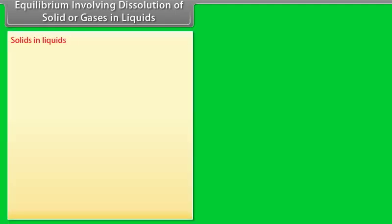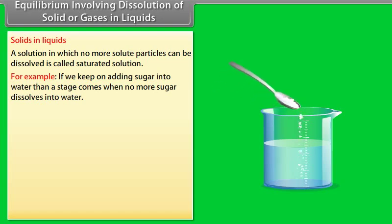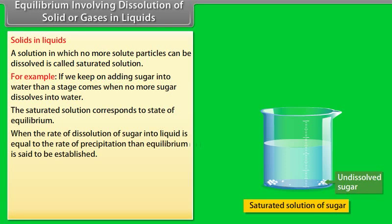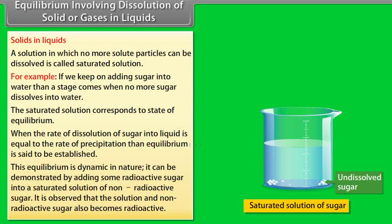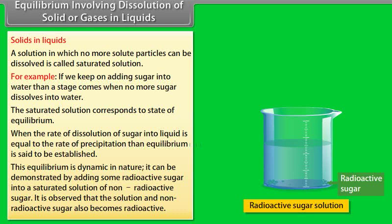Equilibrium involving dissolution of solid or gases in liquids — Solids in Liquids: A solution in which no more solute particles can be dissolved is called a saturated solution. For example, if we keep adding sugar to water, a stage comes when no more sugar dissolves. The saturated solution corresponds to the state of equilibrium, where the rate of dissolution equals the rate of precipitation. This equilibrium is dynamic in nature, demonstrated by adding radioactive sugar to a saturated solution of non-radioactive sugar — the solution and non-radioactive sugar also become radioactive.